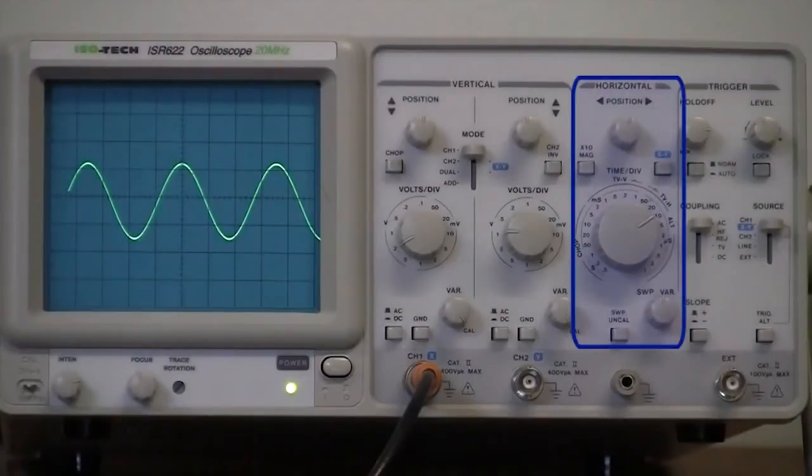The set of controls in the middle of the oscilloscope vary the position and scaling of the horizontal, or time axis, of the signal displayed on the oscilloscope's screen.